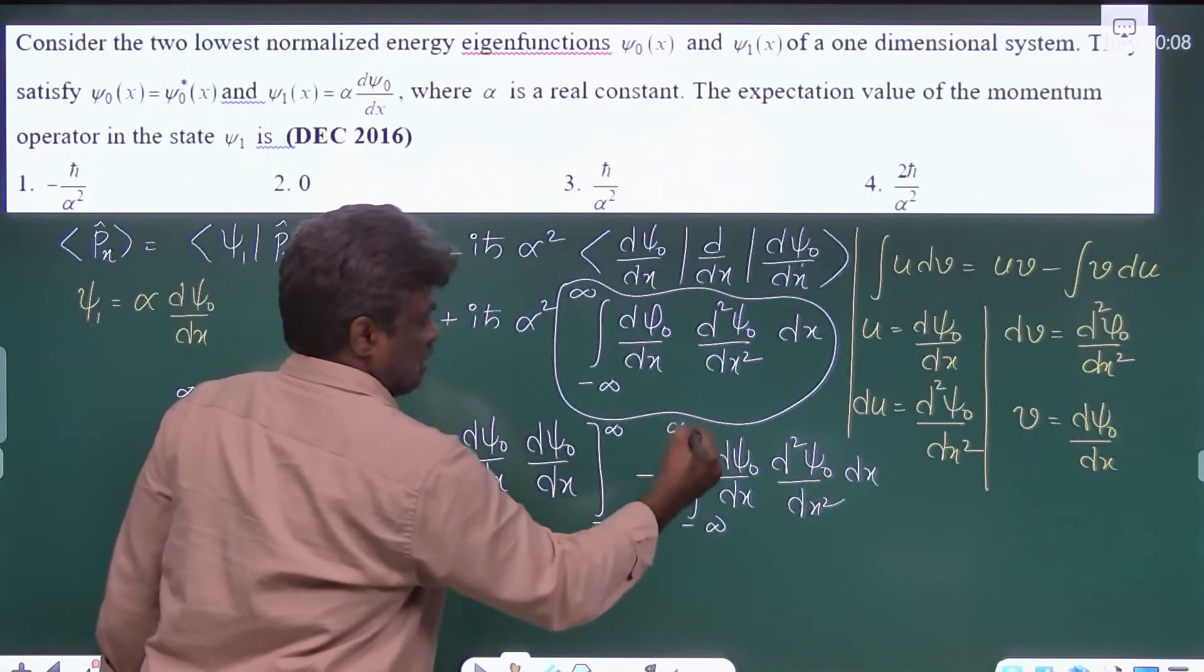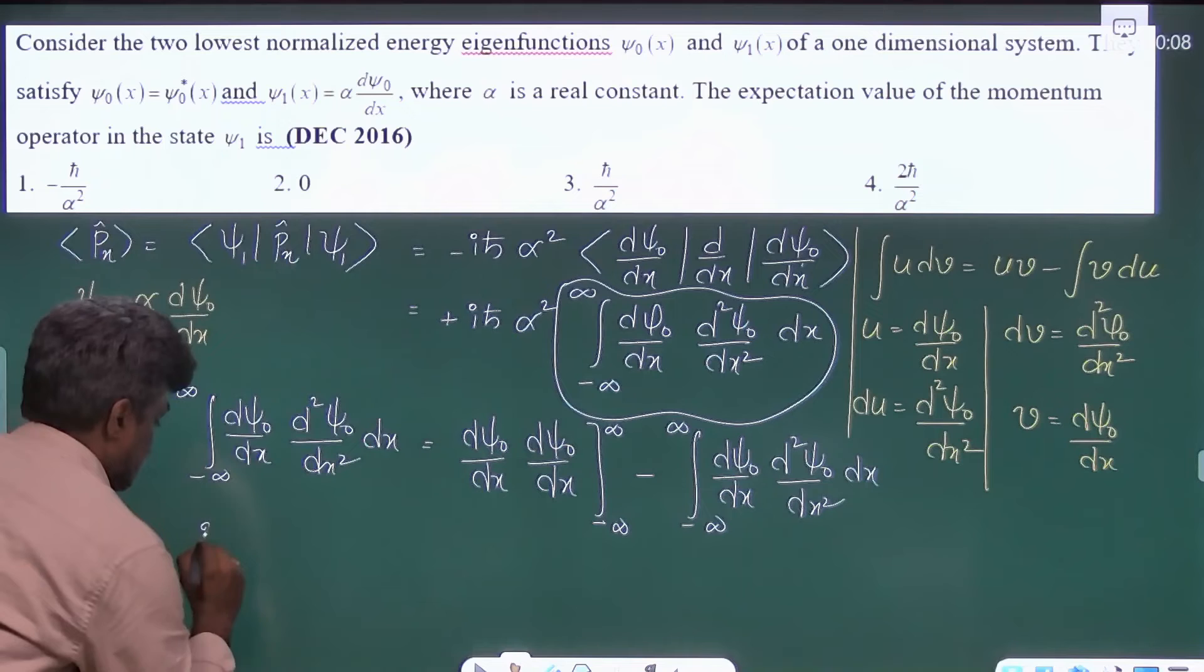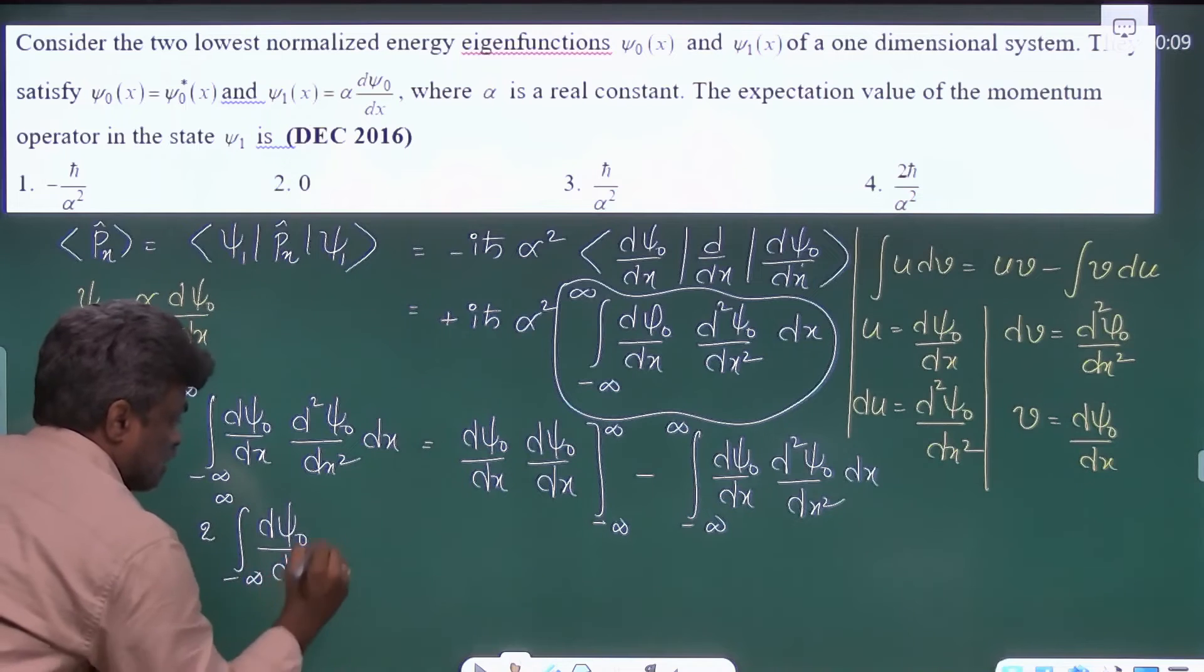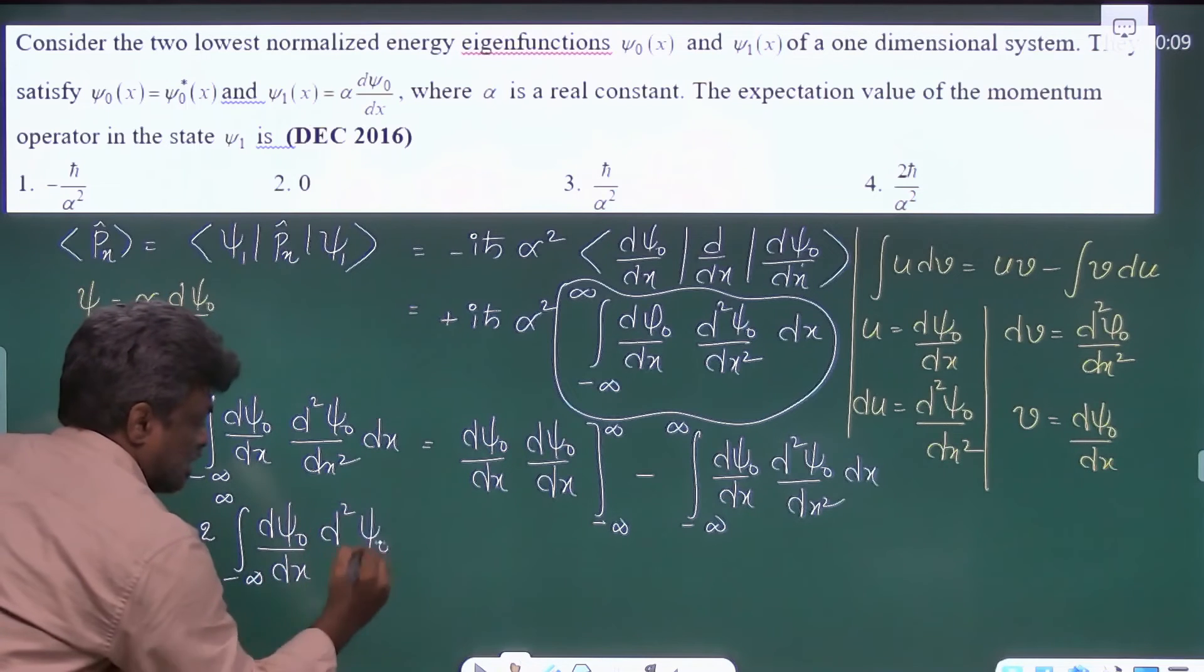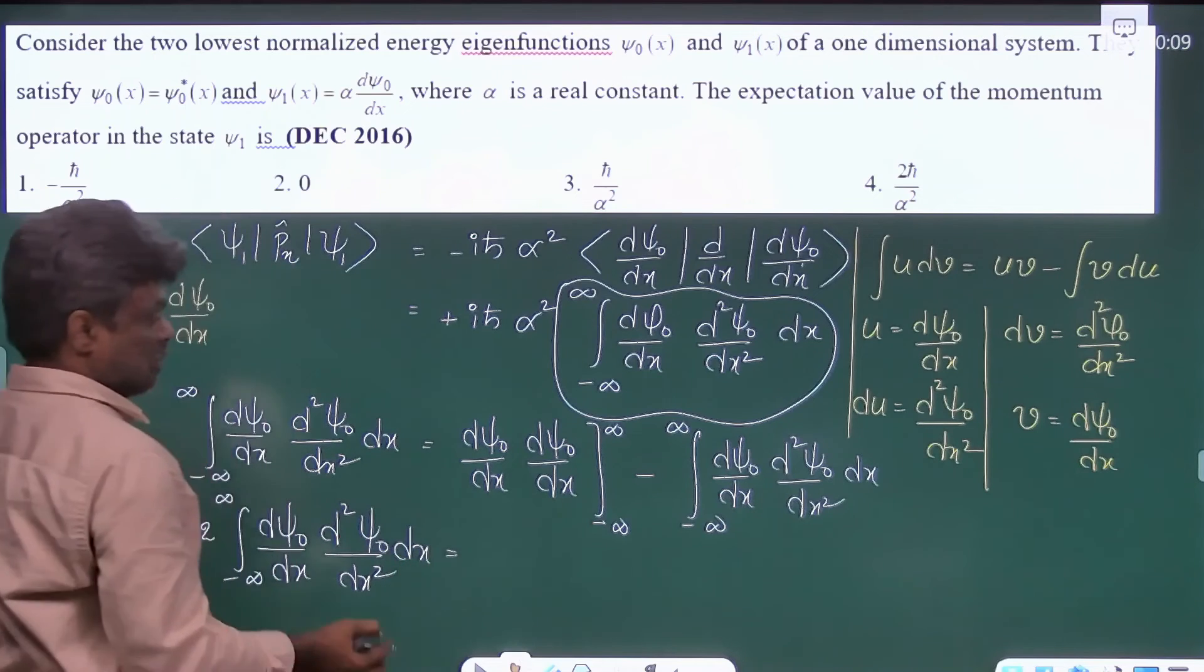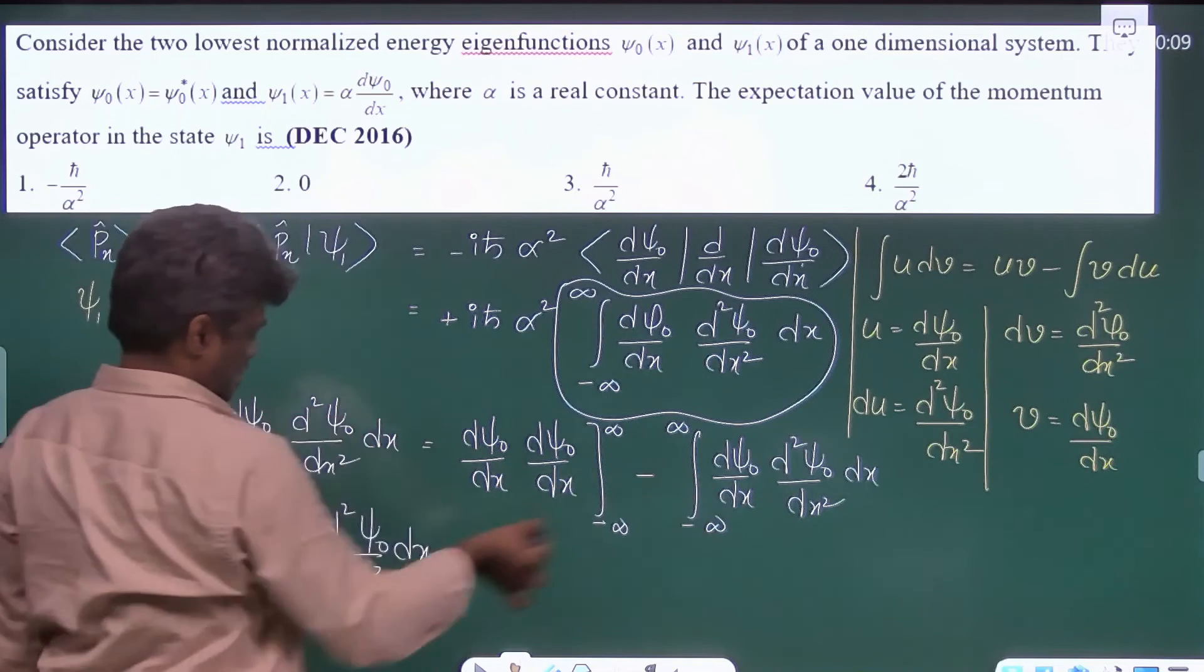You can bring this integral this side, then it is 2 minus infinity to plus infinity d psi0 by dx into d square psi0 by dx square dx is equal to—this term is coming this side—